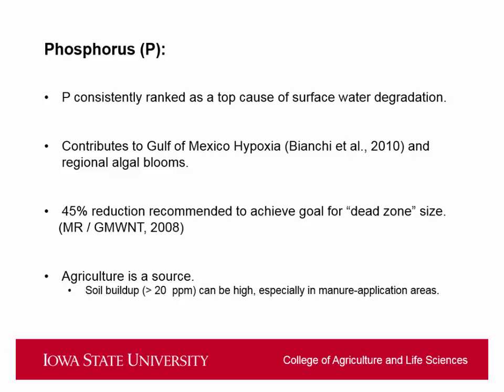Phosphorus is consistently ranked as a top cause of surface water degradation, especially in the agricultural Midwest. It contributes to the Gulf of Mexico hypoxia — that large dead zone off the coast of Louisiana — as well as regional algal blooms. In 2008, a 45% reduction in riverine phosphorus levels was recommended by the Gulf of Mexico Watershed Nutrient Task Force, and agriculture is a major source, especially in areas of high manure application, CAFOs, and poultry litter.